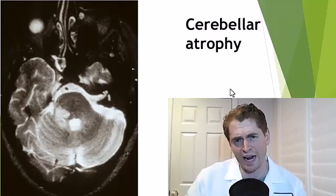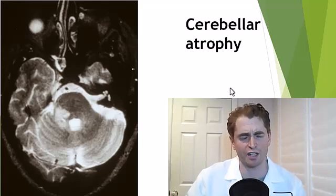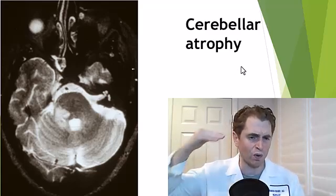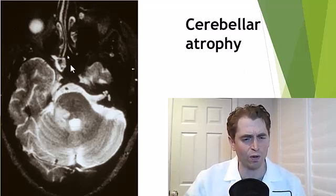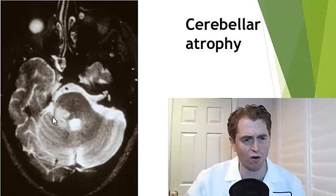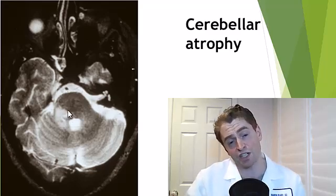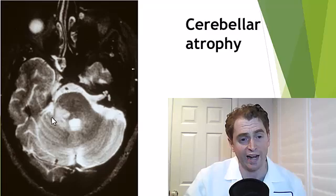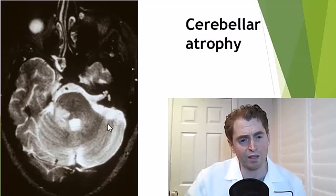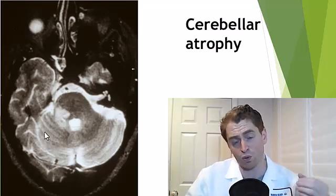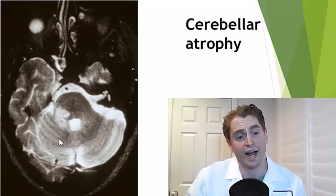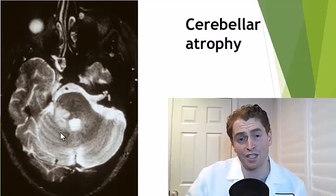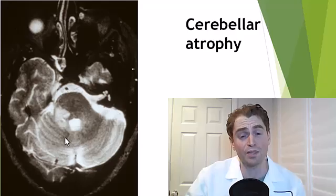Finally, there's cerebellar atrophy — shrinkage of the cerebellum. We're looking at an axial image lowered down, where you can see the nasal septum, orbits, and the pons. There's a large right middle cerebellar peduncle lesion, very typical of multiple sclerosis. The cerebellum appears shrunken — the foliae, or folds of the cerebellum, are larger and more prominent than normal. Injury to the cerebellum like this can be associated with imbalance, clumsiness, and tremor.